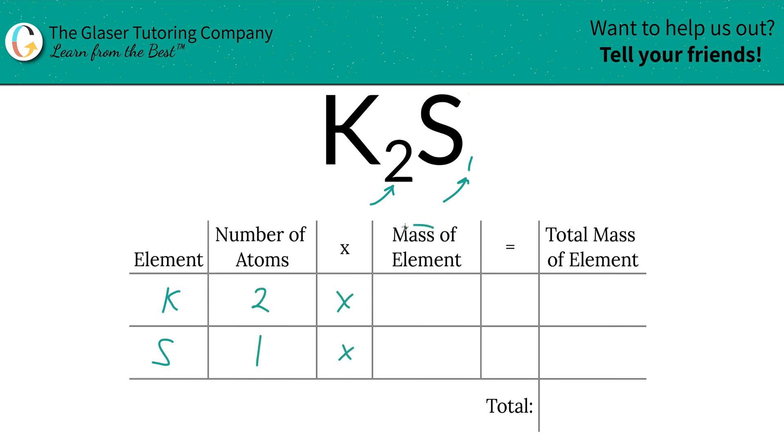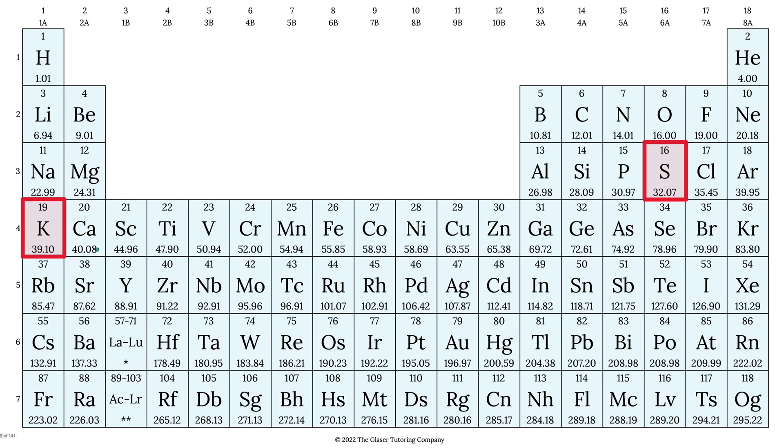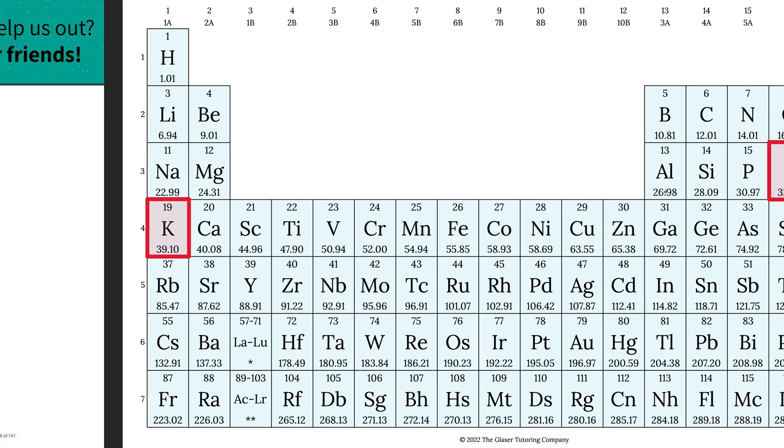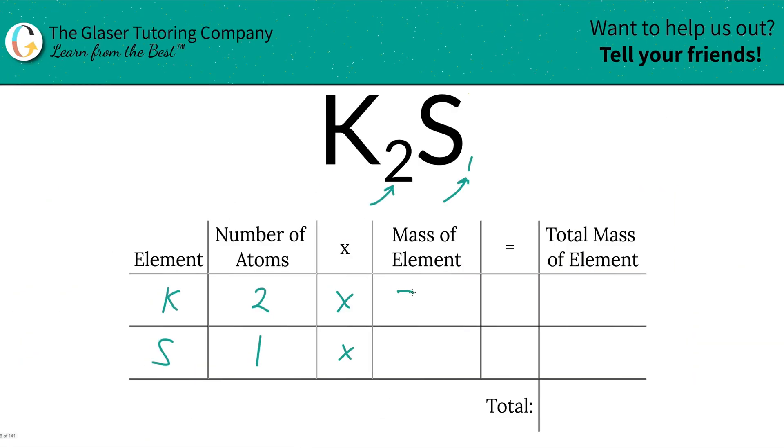Then we're going to multiply those number of atoms by the mass of each element. And those masses are found on the periodic table. So here's potassium, 39.1, and here's sulfur, 32.07. So let's write them in. So 39.1, and then sulfur is going to be 32.07.